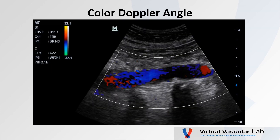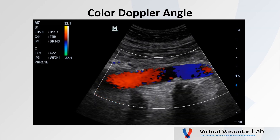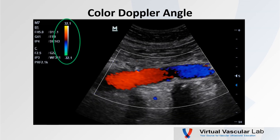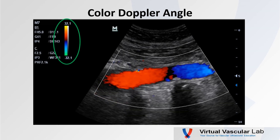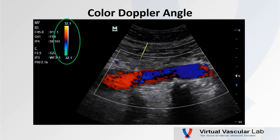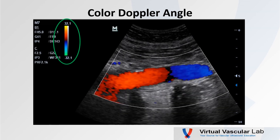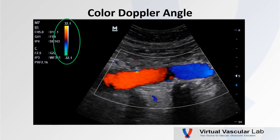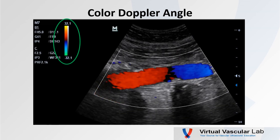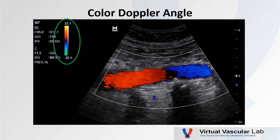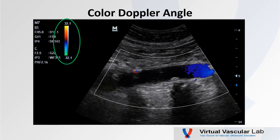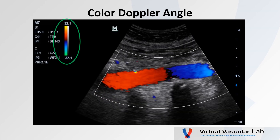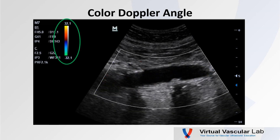Let's consider this color Doppler image of the aorta — a classic example involving changing angles of insonation. Let's check our color bar: flow towards the transducer is red, flow away is blue. On the left side of the image, where our angle of insonation comes in from this direction, we see flow towards the transducer. However, to the right of the image our angle of insonation changes, and we see blue — flow away from the transducer. So flow is moving from left to right. Right in the transition it appears almost black, because the cosine of 90 degrees is zero, giving us zero Doppler shift at a 90-degree angle of insonation.